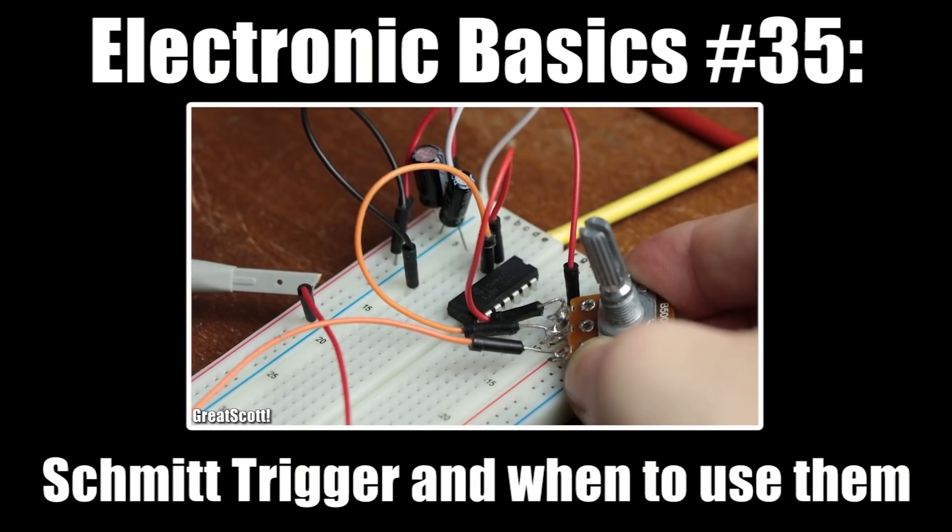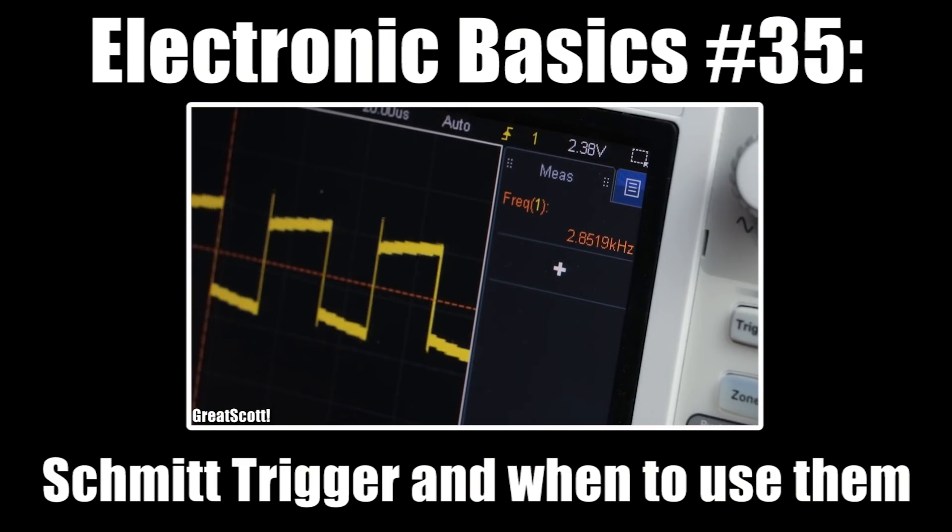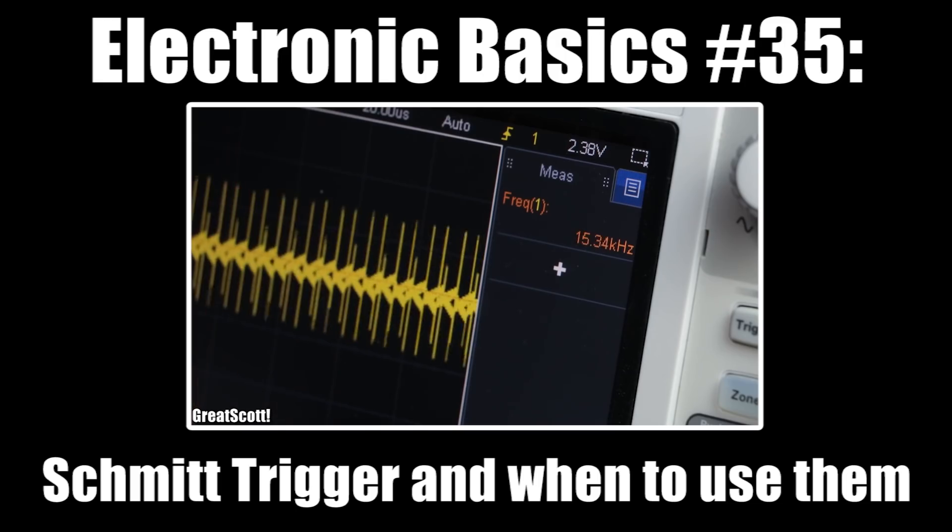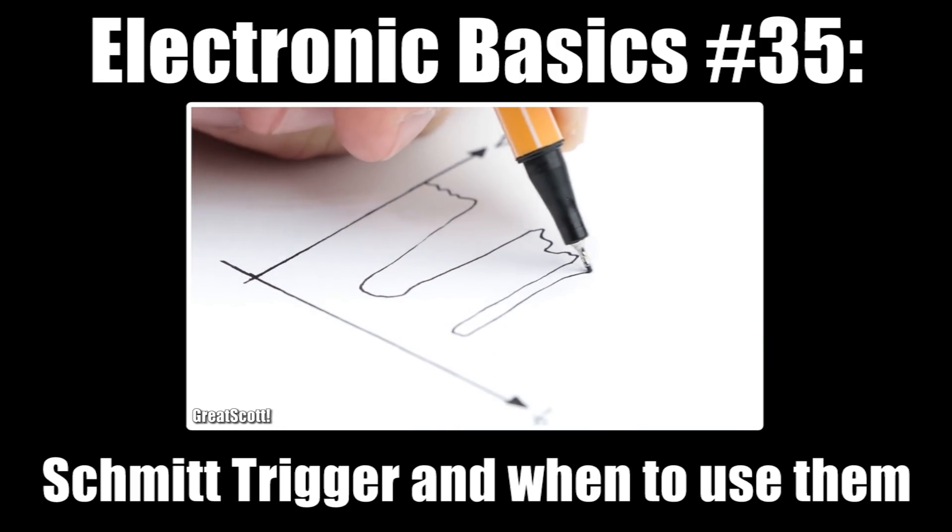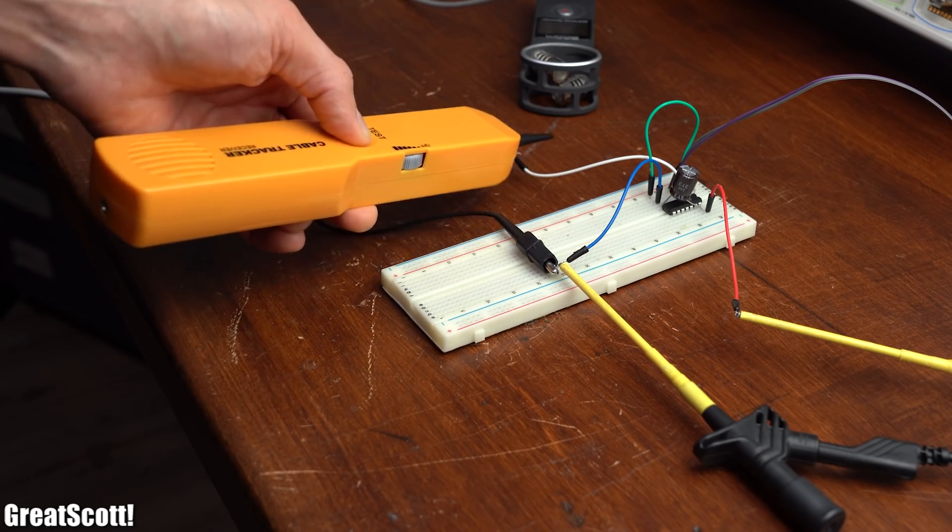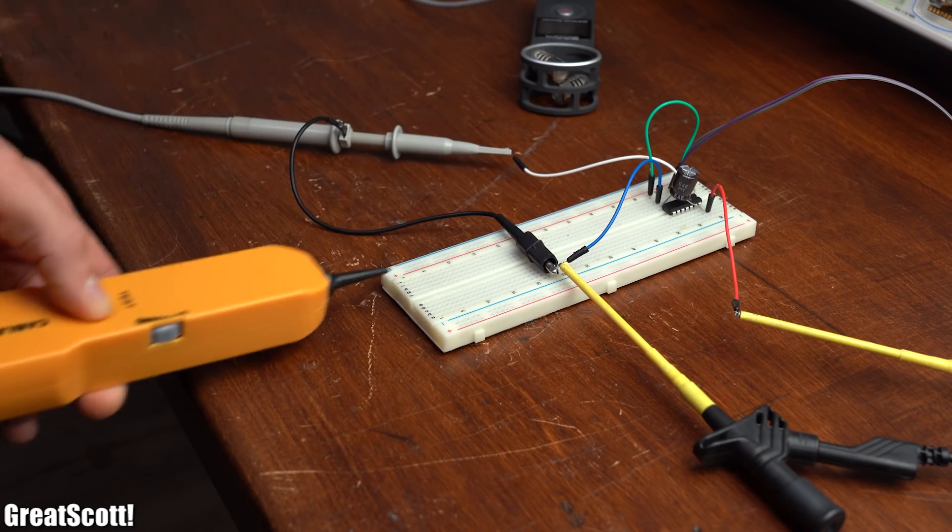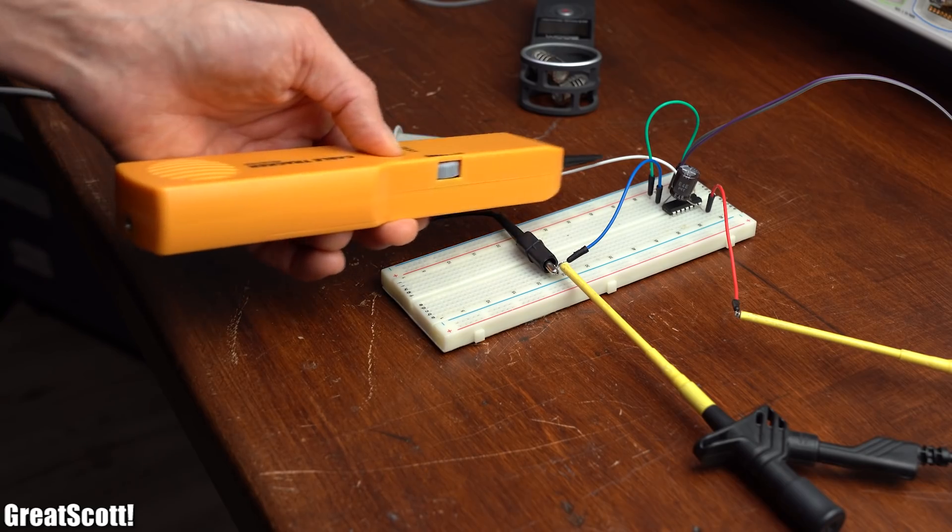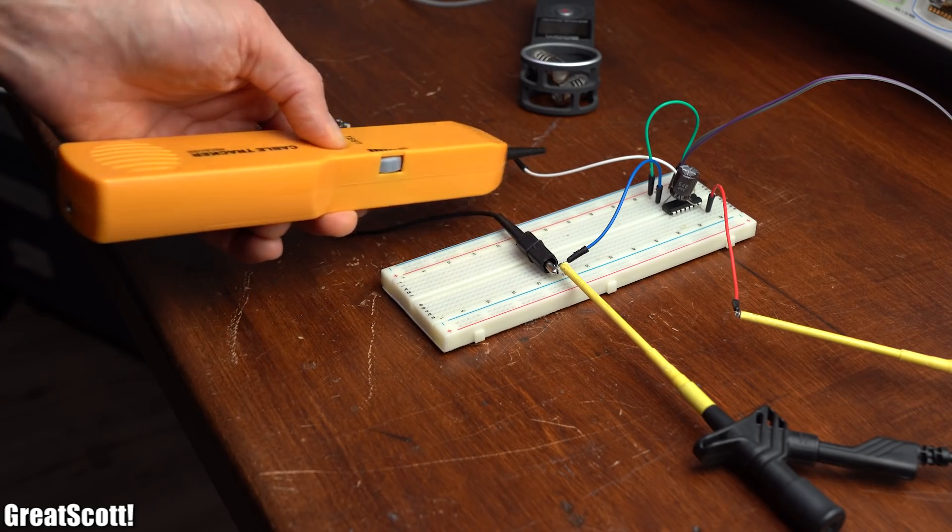If you are interested in how such a relaxation oscillator functions, then make sure to watch my basics video about Schmitt Triggers. But anyway, by bringing the turned on receiver close to the output of the circuit, you can hear that it picks up the sent out waveforms without any problems.